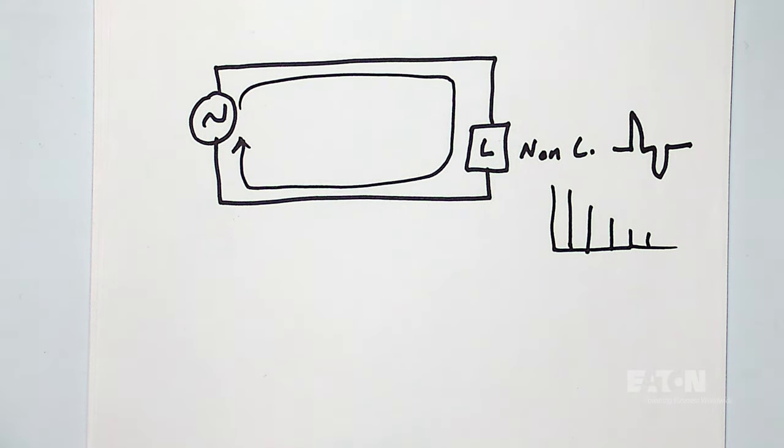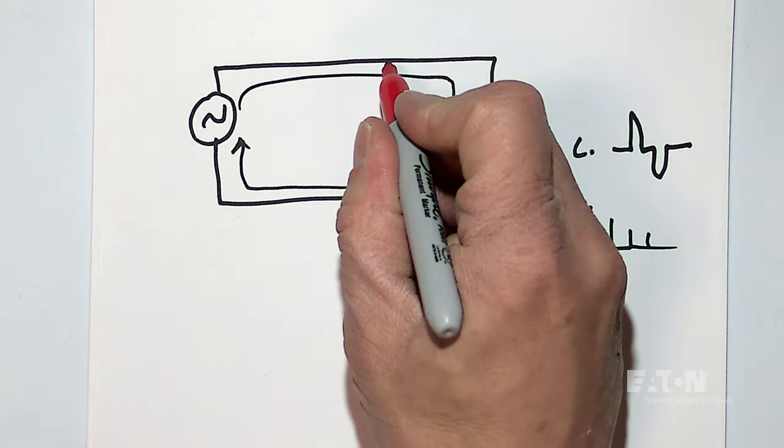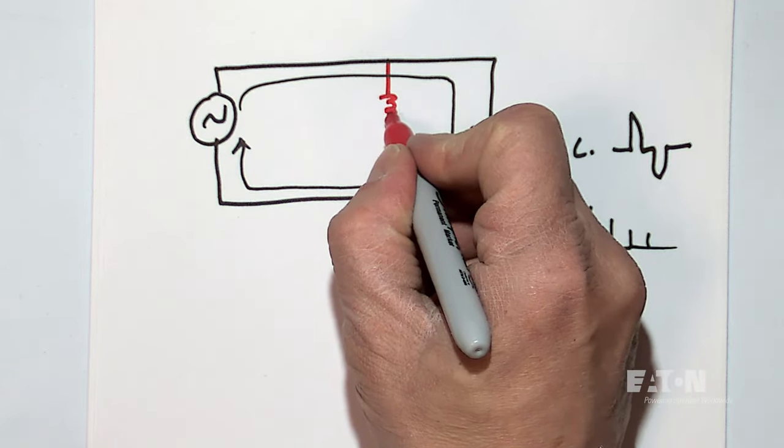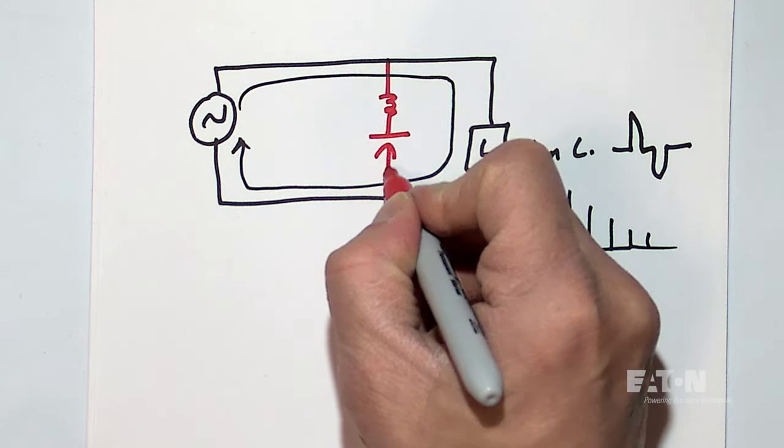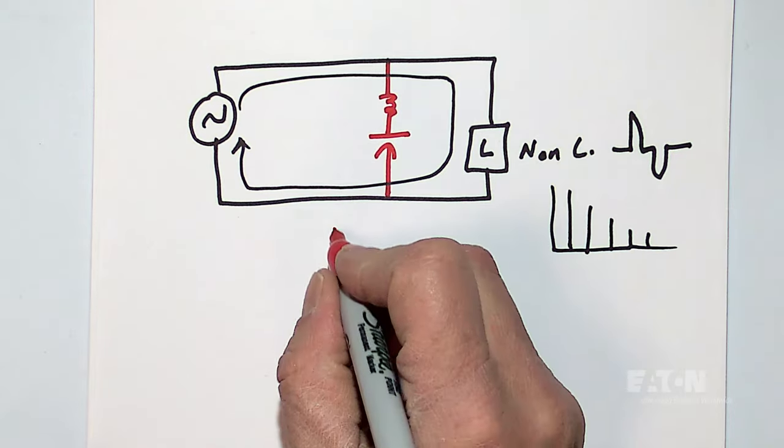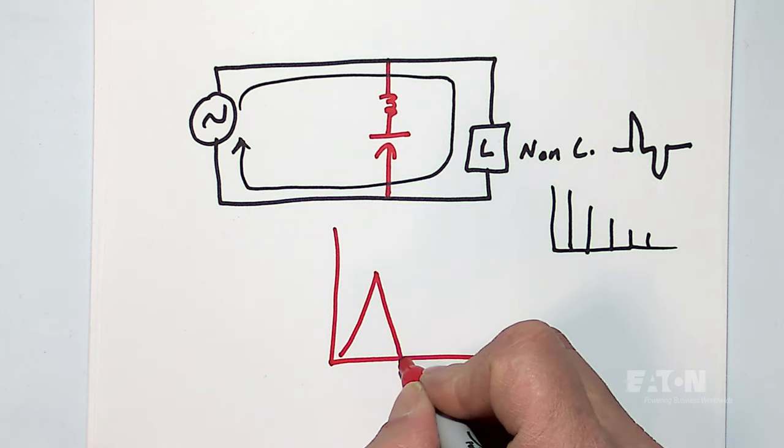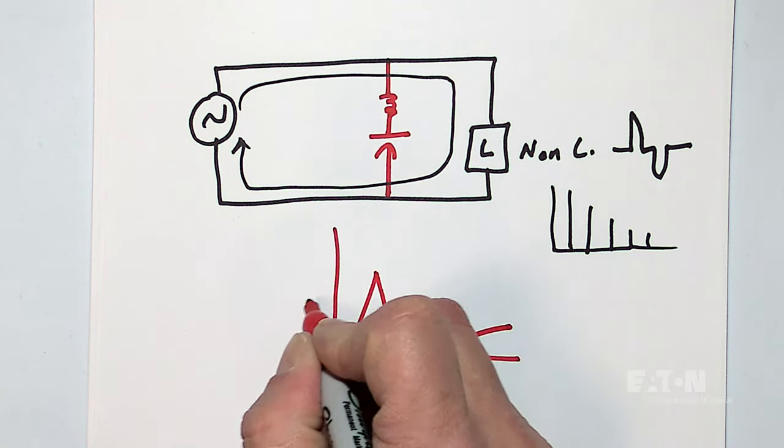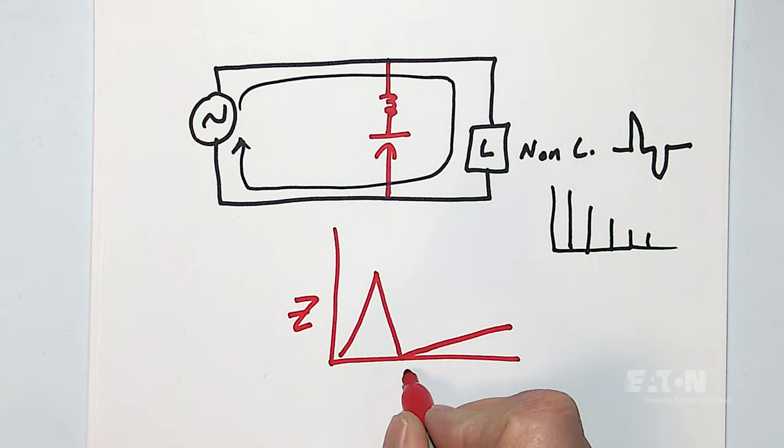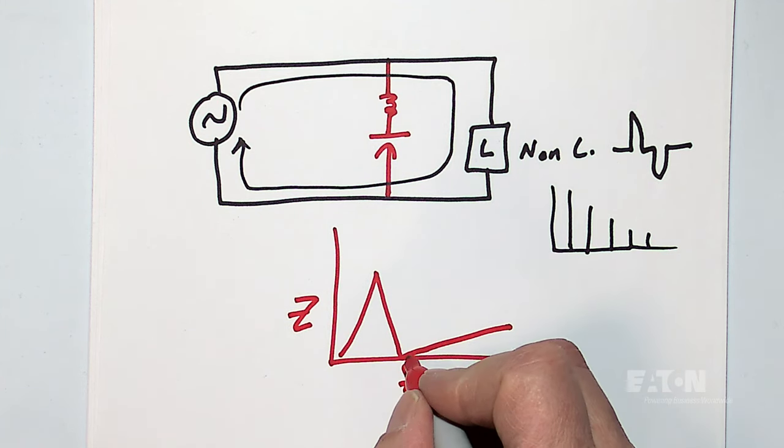So if I put a harmonic filter in the path before the load but after the source, what's a harmonic filter? Basically an inductor tuned with a capacitor and I tune it so that my frequency of tuning is very low impedance at whatever frequency. So let's say I tune it to just below the third harmonic.